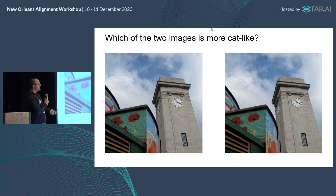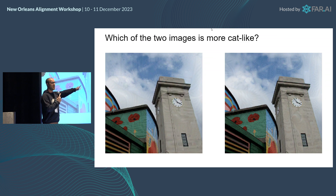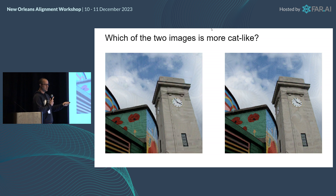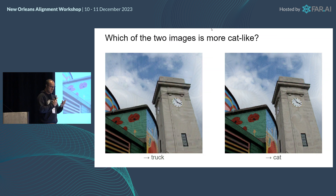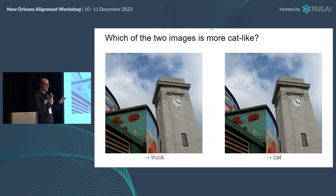We can try this ourselves. Raise your hand if you think the image on the left looks more like a cat. Okay. And now raise your hand if you think the image on the right looks more like a cat. That's actually a surprisingly effective demonstration because there are about 50% more hands raised for the image on the right. And in fact, the image on the right has been adversarially perturbed in order to make computer vision algorithms believe that it is a cat, while the image on the left has been adversarially perturbed to make computer vision algorithms think that it is a truck.